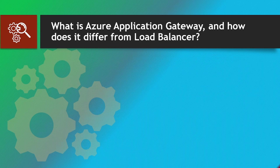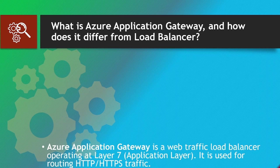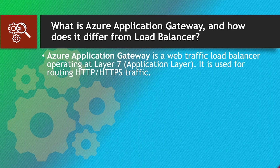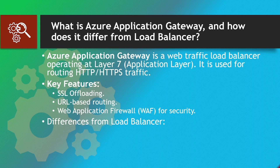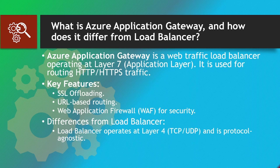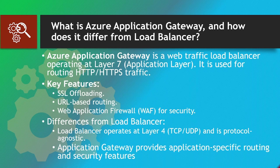What is Azure Application Gateway and how does it differ from Load Balancer? Azure Application Gateway is a web traffic load balancer operating at Layer 7 (application layer), used for routing HTTP/HTTPS traffic. Key features: SSL offloading, URL-based routing, and Web Application Firewall (WAF) for security. Differences from Load Balancer: Load Balancer operates at Layer 4 (TCP/UDP) and is protocol agnostic, while Application Gateway provides application-specific routing and security features.